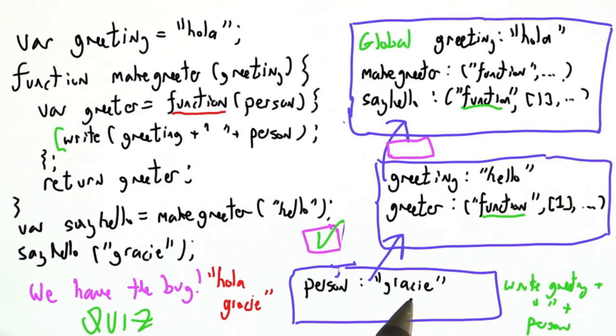How about person? Gracie. Ah, we'll write out hello Gracie. So with the bug we get hola Gracie, without the bug we get, correctly, hello Gracie.